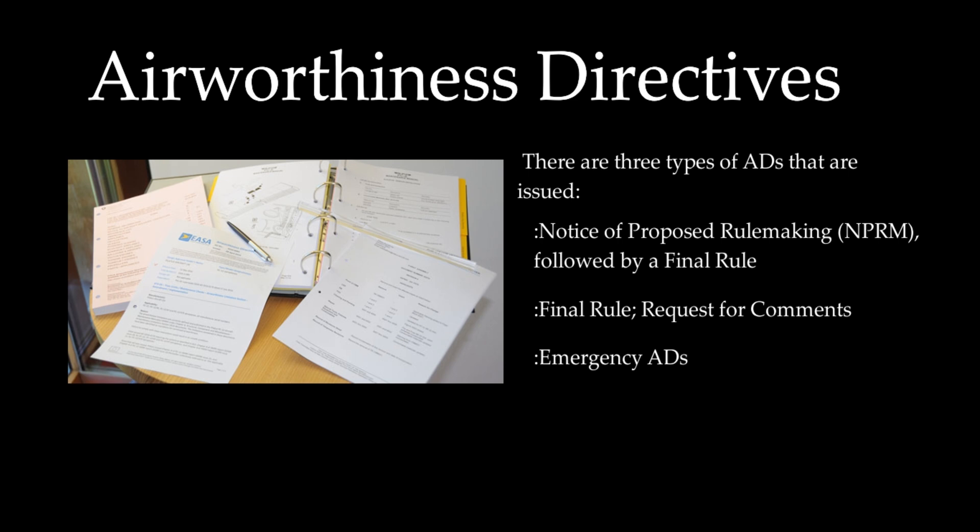This is where the emergency AD usually comes from, and the intention is to rapidly correct an urgent safety of flight situation. All known owners and operators of affected aircraft, or those who are known to have an affected product installed, will be sent a copy of an emergency AD. Within 30 days of the emergency AD issue date, a final rule AD identical to the emergency AD will normally be published in the Federal Register to make it accessible to the public. The European Union Aviation Safety Agency, EASA, has a similar process to that of the FAA, except that EASA issues proposed airworthiness directives, PAD, to consult for public comments before making a final rule, instead of NPRM.